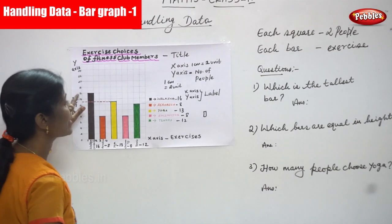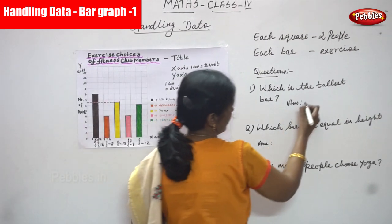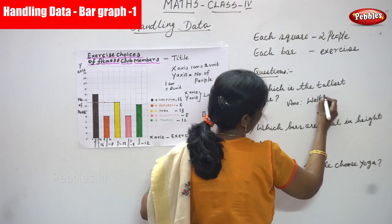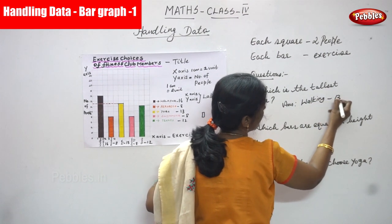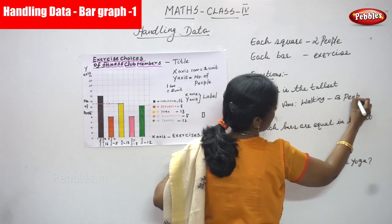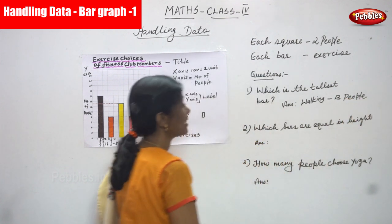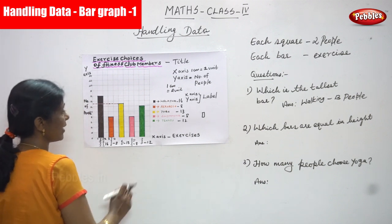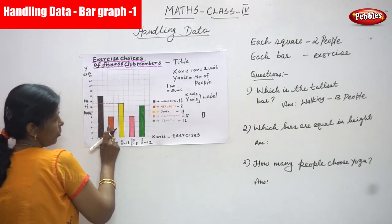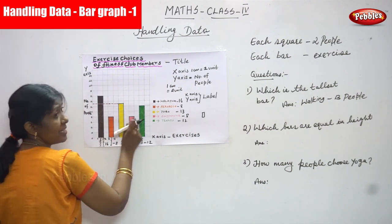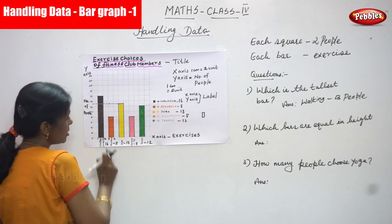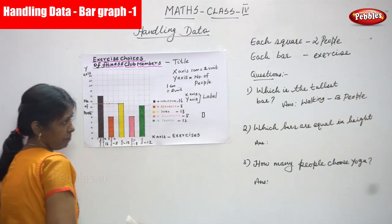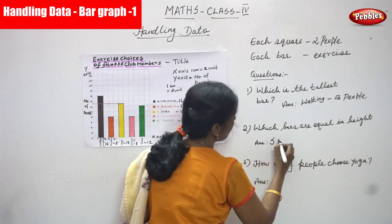The question is: which is the tallest bar? The answer is walking, with 16 people. Next question: which bars are equal in height? Aerobics and swimming are both equal — eight people each chose aerobics and swimming.